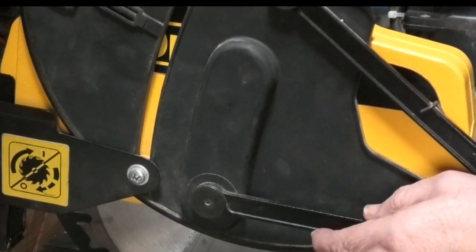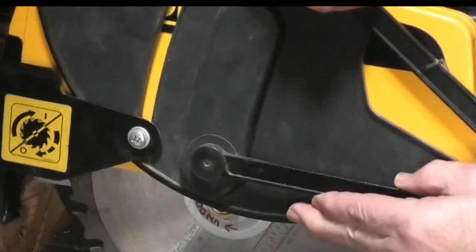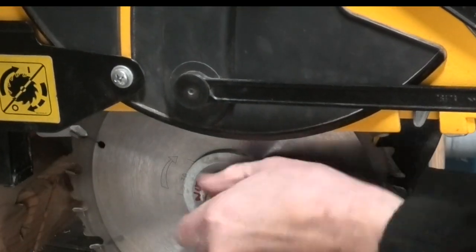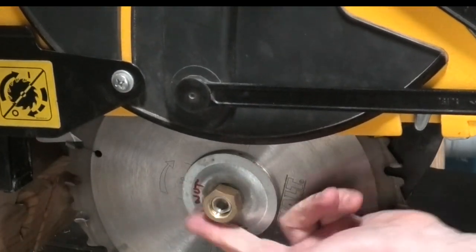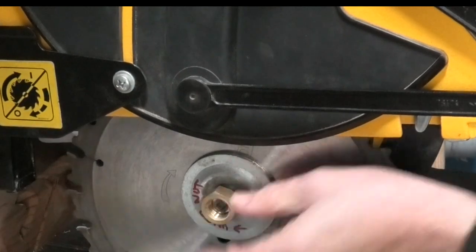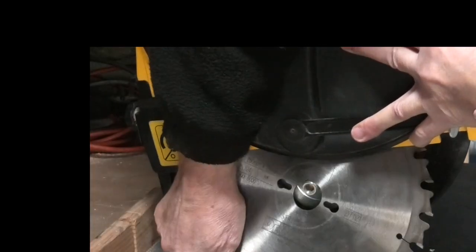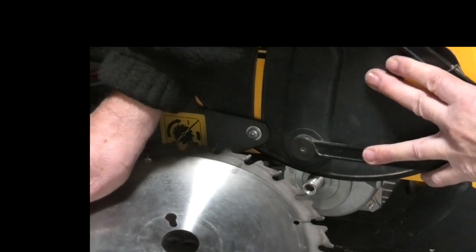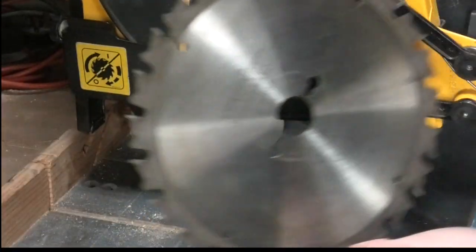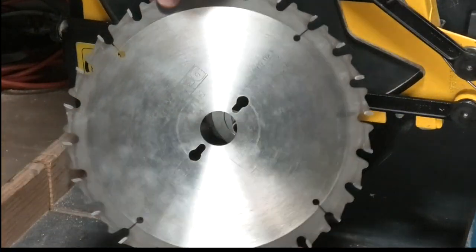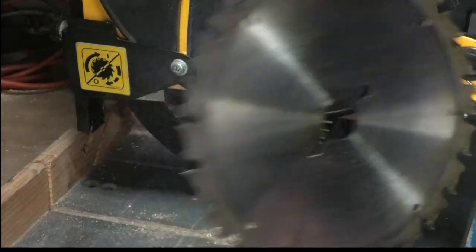So let's go into the workshop and see how we do it. This is my Dewalt radial arm saw and I want to remove the blade to sharpen it. This blade has 24 carbide tips and is 10 inches in diameter.